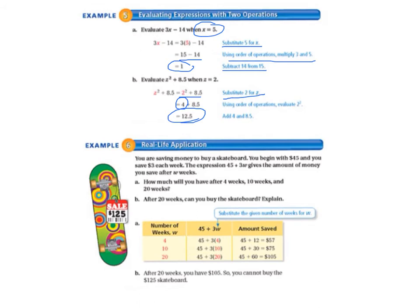Finally we get to example 6, the real life application. We're saving money to buy a skateboard. We begin with $45 and we save $3 each week. So that's important information. We're going to use our close reading strategies and circle that. The expression 45 plus 3w gives the amount of money we save after w weeks. How much money will we have after 4 weeks, 10 weeks, and 20 weeks? Is the first question. And then it asks after 20 weeks, can we buy the skateboard? And explain.